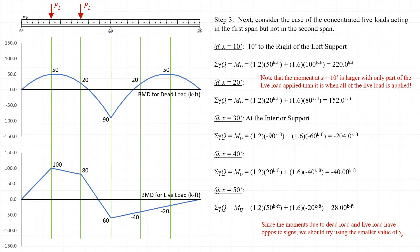However, if we consider the possibility that the live load acts only in the first span and not in the second span, we end up with a positive live load bending moment in the first span, but a negative live load bending moment in the second span. In fact, the live load moments in the first span are higher than they were when the live loads were present in both spans concurrently.